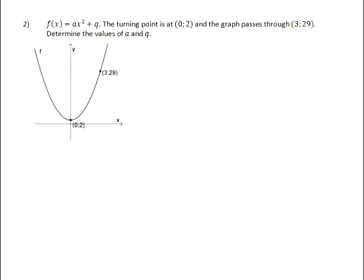So we know that the q value will be given by the value of the turning point, which is here at 0 and 2. That means that we moved our graph 2 units up. So f of x will be equal to ax squared plus 2.